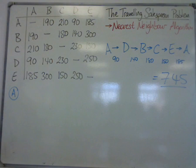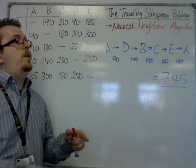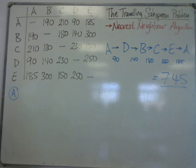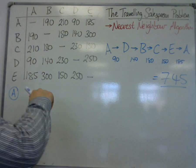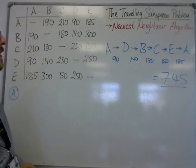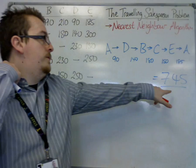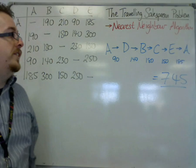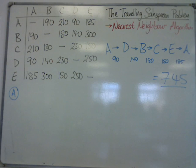So that's how you can do nearest neighbour without having to write anything on the matrix. You need this route, you need the distances, so I like to write it out like this, so the total distance is 745 in this case.